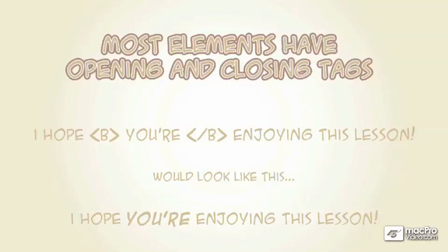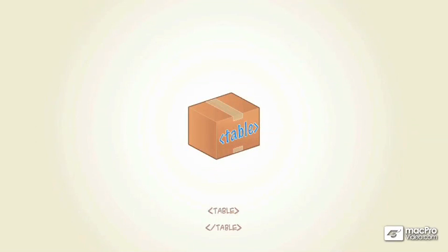Most elements have an opening tag and a closing tag. Here's a simple example using an older tag. I've got a sentence — 'I hope you are enjoying this lesson' — and the word 'your' is surrounded by B tags for bold. The bold has to start in a very specific spot, then we have the content the element holds, and then the element has to close or end. At the bottom of the screen you can see how this looks in a browser: the word 'your' appears in bold. The closing tag is exactly the same as the opening tag — the only difference is it's preceded by a forward slash.